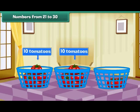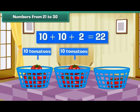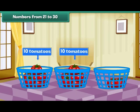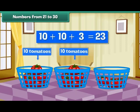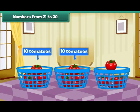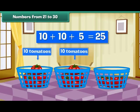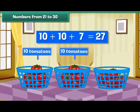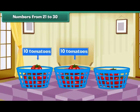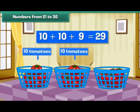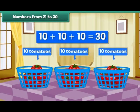Place one more tomato in the third basket. We have two tens and two — that is 22 tomatoes. Similarly, two tens and three make 23, two tens and four make 24, two tens and five make 25, two tens and six make 26, two tens and seven make 27, two tens and eight make 28, two tens and nine make 29. Two tens and ten make three tens — that is 30.